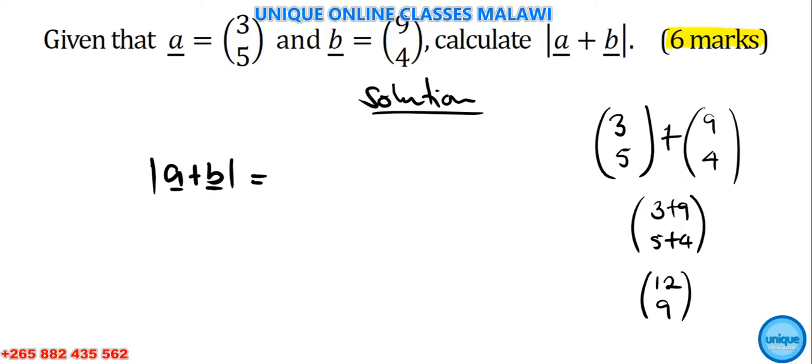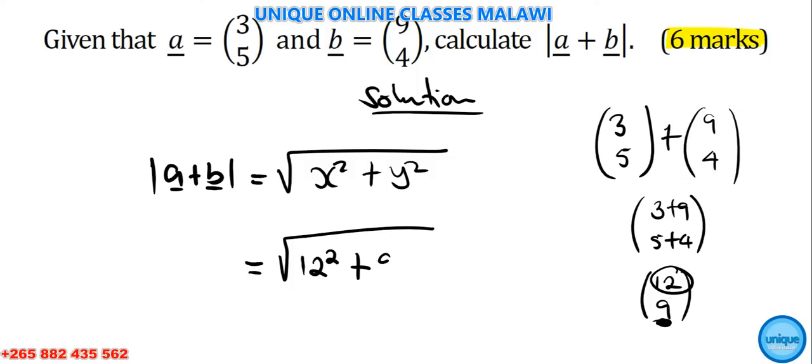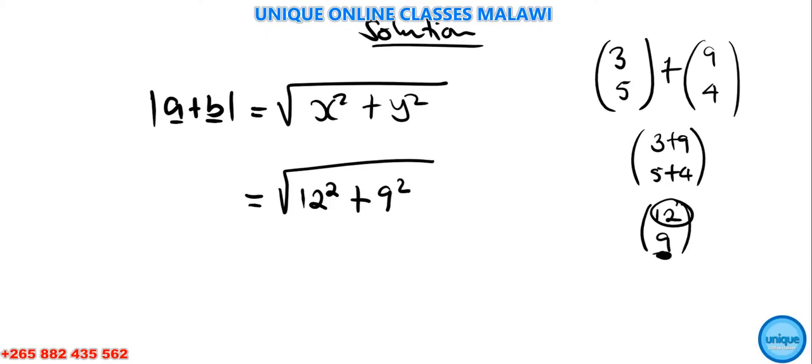Which will be 12 here and 9 here. So that's (12, 9). Now to find the magnitude, we're going to write it as the square root of x² + y². X is 12, so we have 12² plus y, which is 9, so 9².